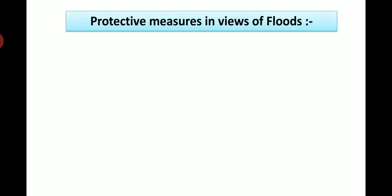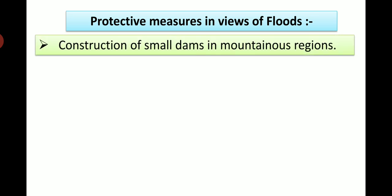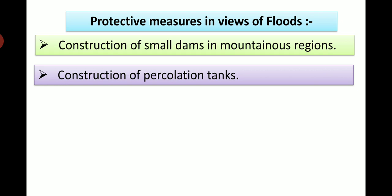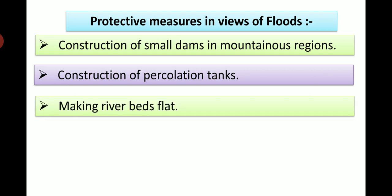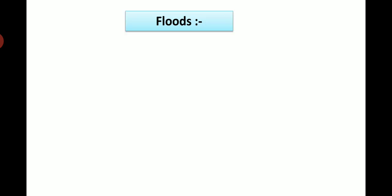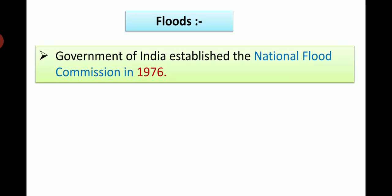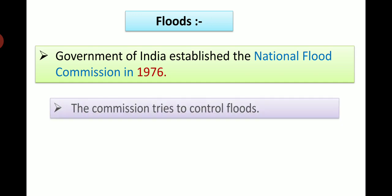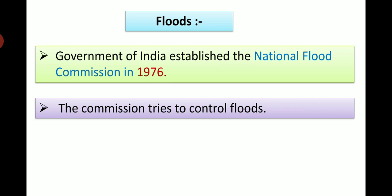Protective measures in view of floods: Construction of small dams in mountainous regions, construction of percolation tanks, making river beds flat, cultivation of new forests, connecting rivers. Government of India established the National Flood Commission in 1976. The commission tries to control floods.